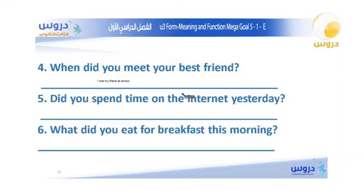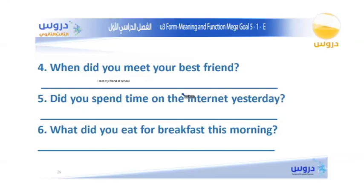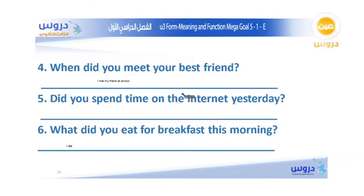The fifth question: Did you spend time on the internet yesterday? Since it starts with 'did,' it is a yes or no question. The answer must be either: Yes, I did, or No, I did not. The sixth question: What did you eat for breakfast this morning? 'Eat' is an irregular verb; its past form is 'ate.' Answer: I ate eggs.